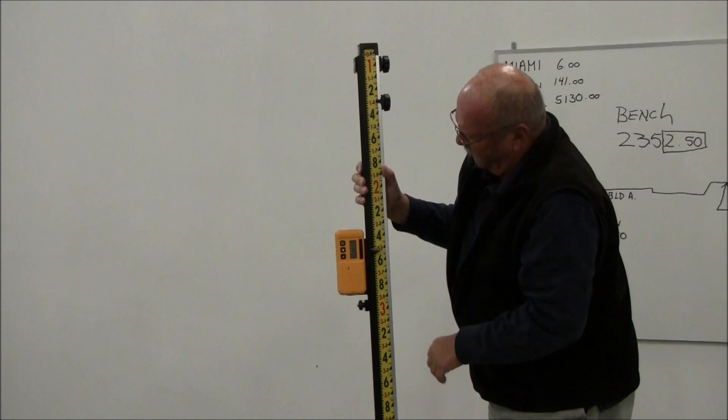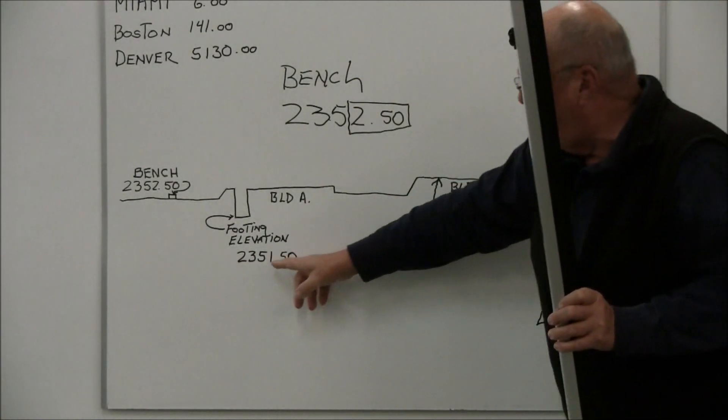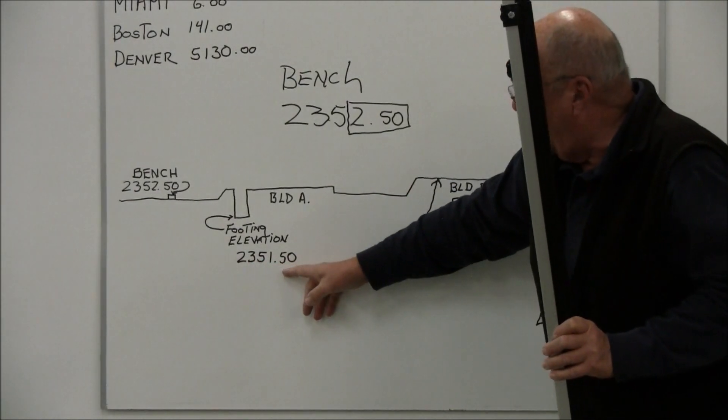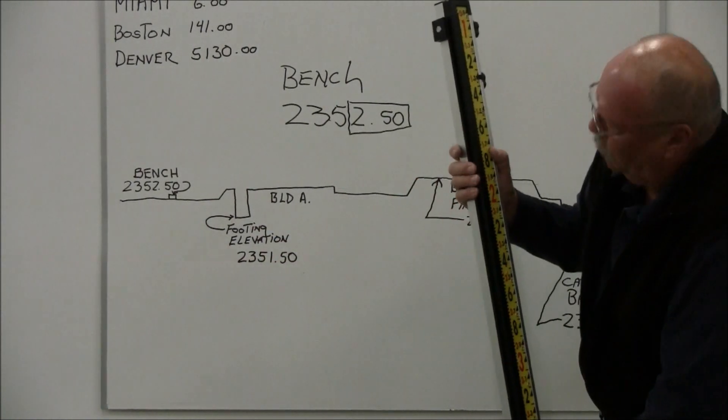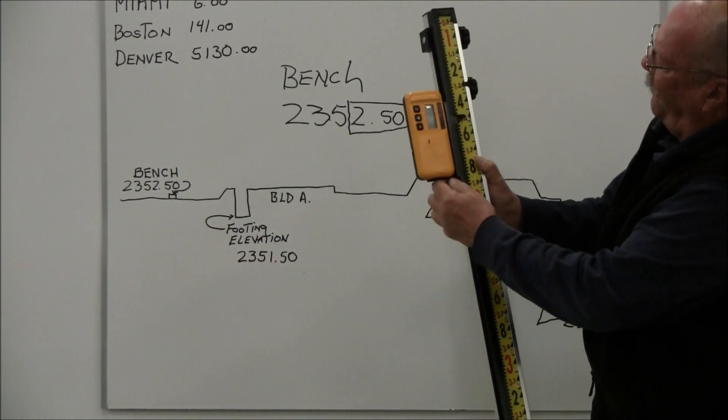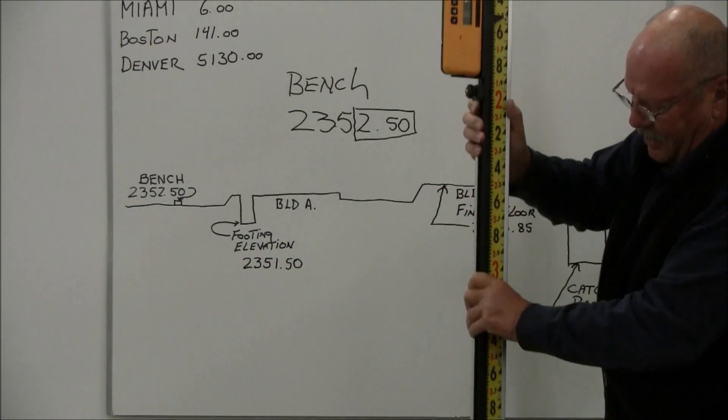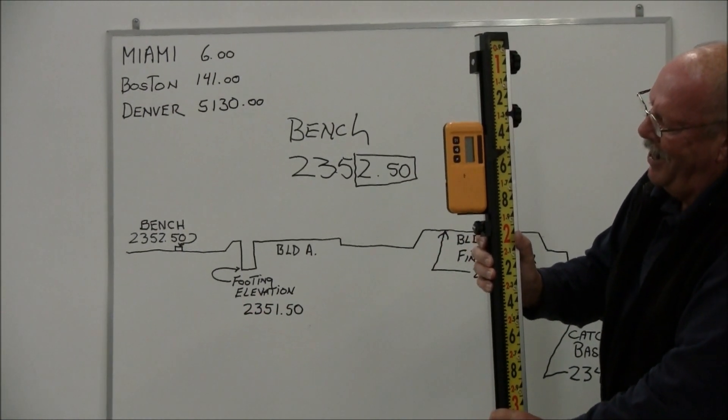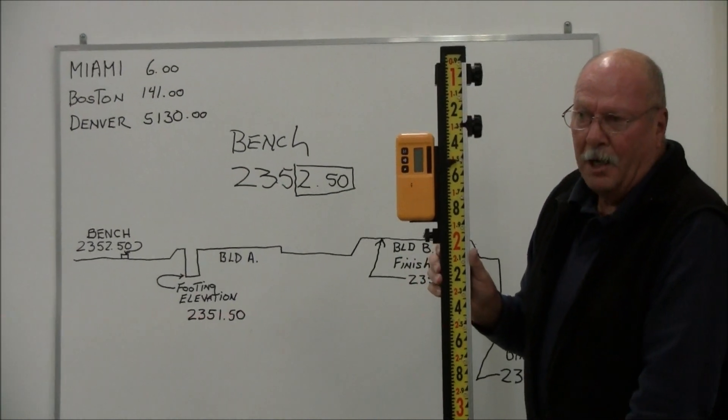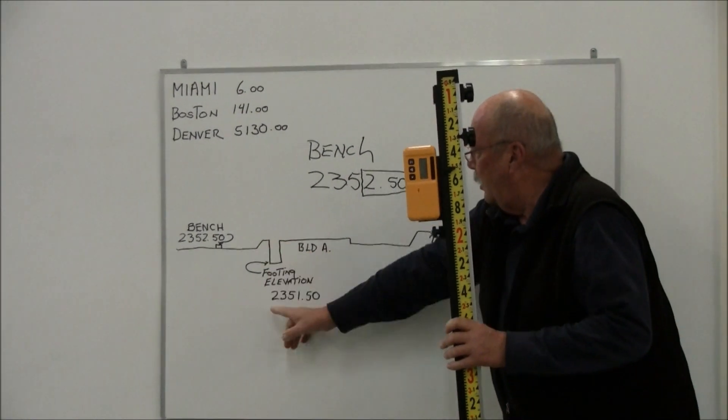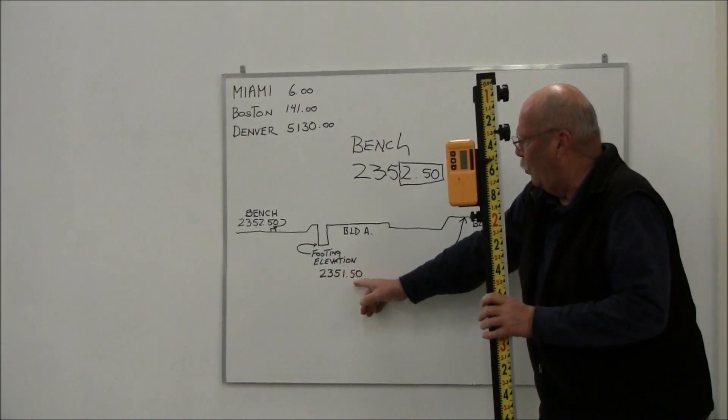So I'm on grade there and I'm at 2.50. If I want to pick up elevation at 2351.50, which is say a footing elevation, I can run the receiver up to 1.50. And as I dig, when the receiver goes off, I'll know that the bottom of my rod is at this 2351.50.